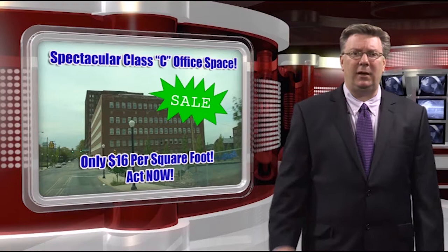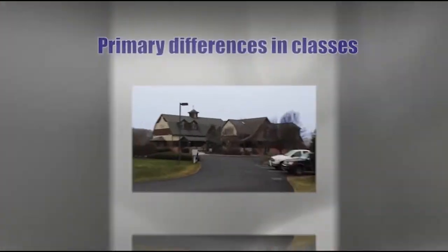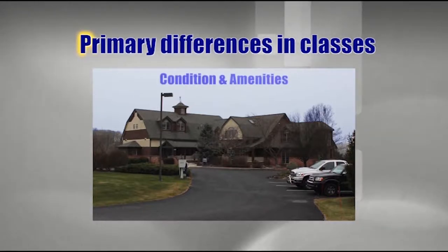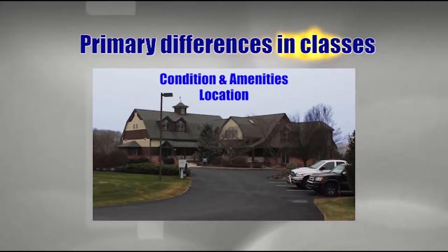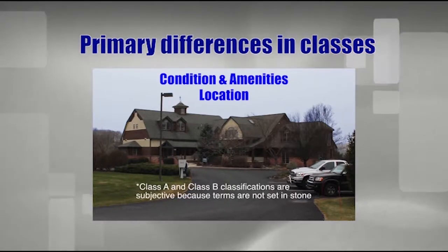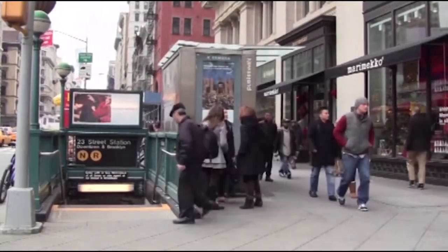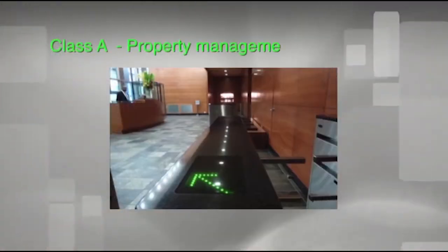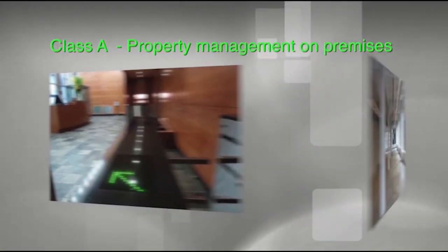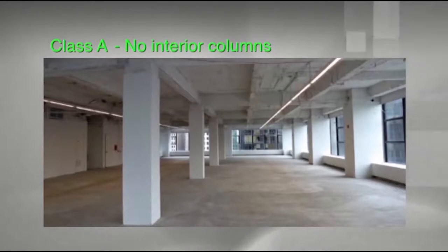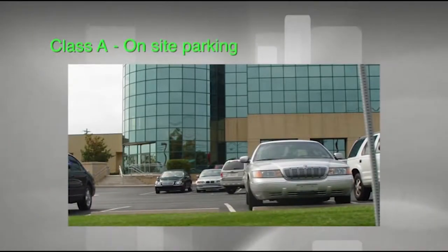The differences between the classes has to primarily do with the condition and the amenities, although location can play a key role as well. These classifications can be somewhat subjective because the terms A and B are not set in stone. Brand new space is typically considered Class A when it's built, but whether Class B space can be updated to Class A depends on your marketplace. In some urban locations there are definitive characteristics — for example, in Manhattan, Class A generally means there's property management on the premises and the building doesn't have interior columns, which might reduce a tenant's ability to redefine the space. In some locations outside Manhattan, Class A includes on-site parking where Class B may not.